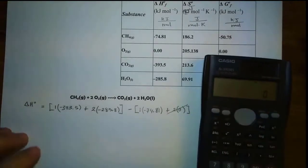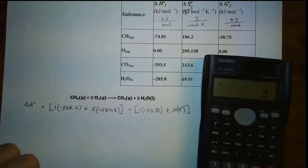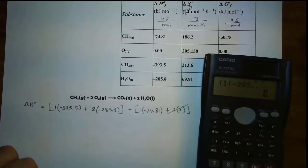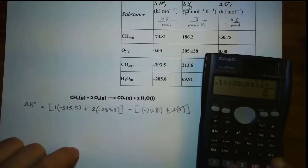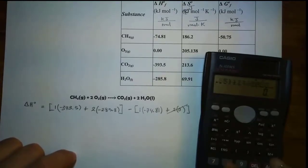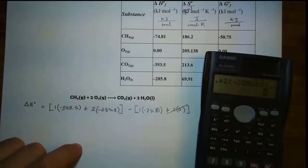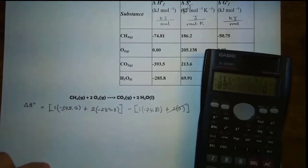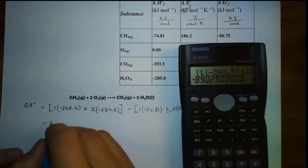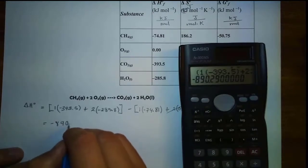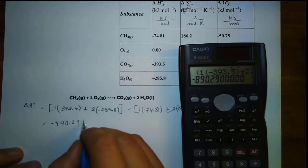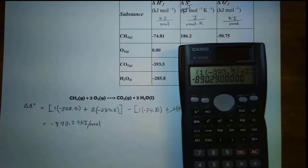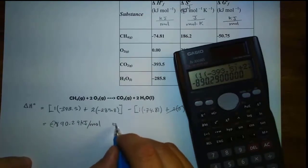Now let's plug into the calculator. Every time you see the caret character, just put parenthesis. So: parenthesis, 1 times parenthesis, negative 393.5, parenthesis, plus 2 times parenthesis, negative 285.8, parenthesis, parenthesis, minus parenthesis, 1 times parenthesis, negative 74.81, parenthesis, parenthesis. The answer is negative 890.29. The unit is kilojoule over mole, and the negative tells you it is an exothermic reaction.